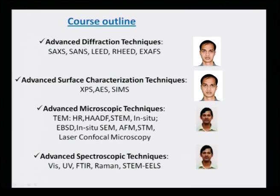The last part of the course covers advanced spectroscopic techniques, which are very important nowadays for research on nanomaterials. This includes UV-visible spectroscopy, Fourier transform infrared spectroscopy, Raman spectroscopy, and STEM electron energy loss spectroscopy.